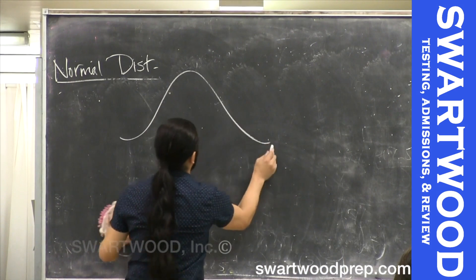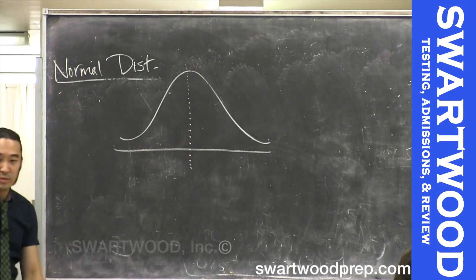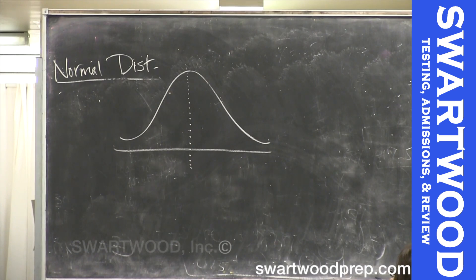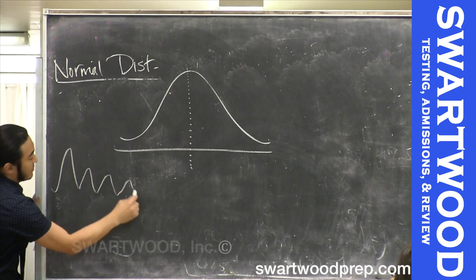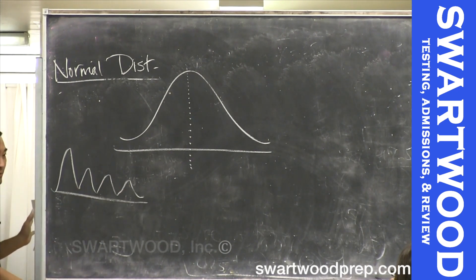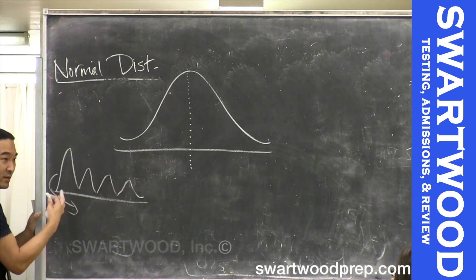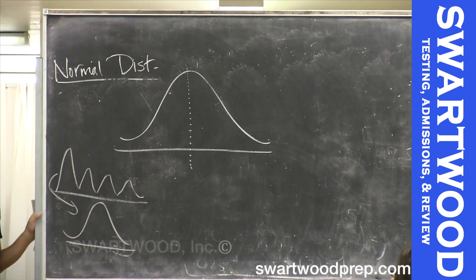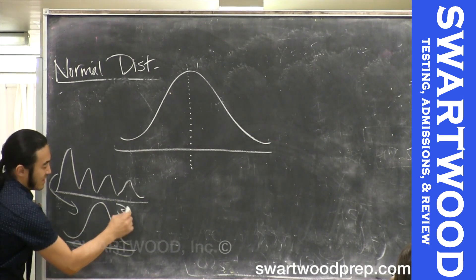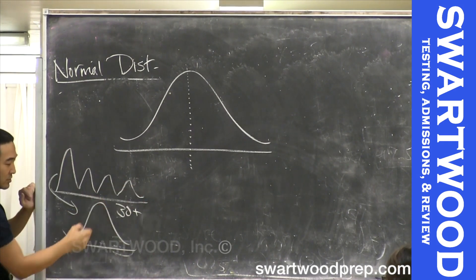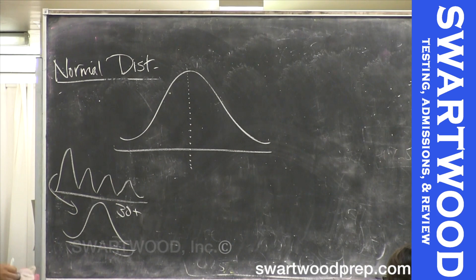Does anybody know why they care about normal distribution? It turns out that if your original distribution looked like anything — it doesn't matter what the shape is — if you start taking samples and averaging the samples and looking at the distribution of those sample means, even from a weird distribution, it ends up being a normal distribution. As long as the samples are big enough — once the sample size is like 30-plus — the distribution of the samples will always look normal. That's the central limit theorem. We don't need that, but that's why they care about this.